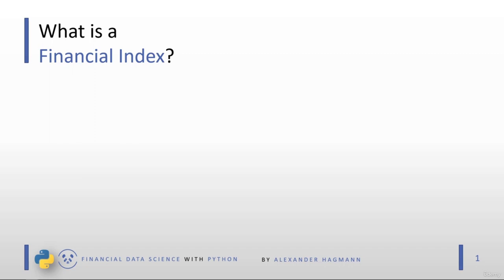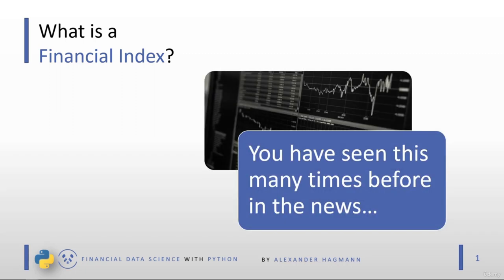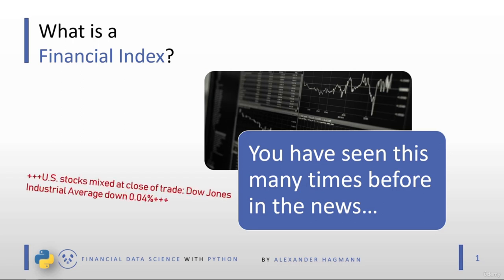Even if you have no detailed knowledge on financial indexes, you likely encounter them almost every day when you read the news. For example, you might see headlines like 'US stocks mixed at close of trade, Dow Jones Industrial Average down 0.04%.' Instead of listing all US stocks — we have a few thousand — they simply say the Dow Jones is down 0.04%. The Dow Jones Industrial Average is an index that measures, aggregates, or summarizes the performance of US stocks in one number.